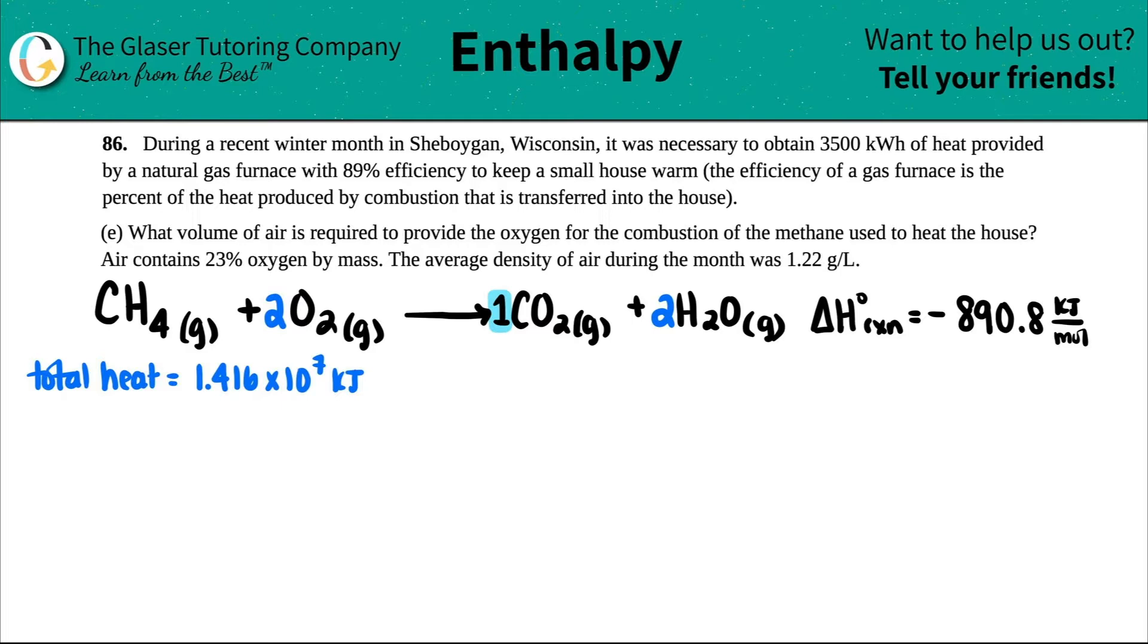So now we're focusing on letter E. It says, what volume of air is required to provide the oxygen for the combustion of the methane used to heat the house? And air contains 23% oxygen by mass, and the average density of air during that month was 1.22 grams per liter.